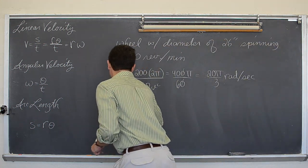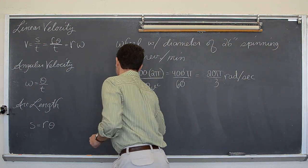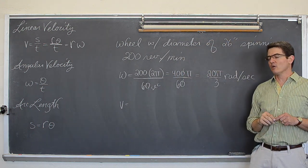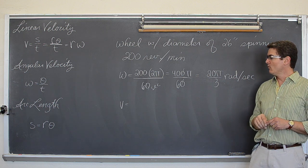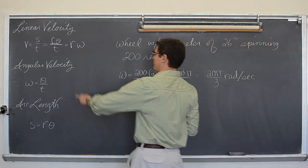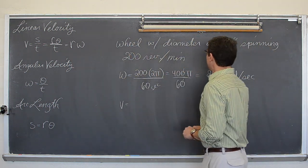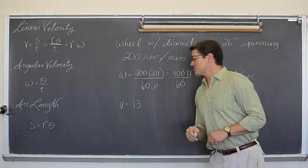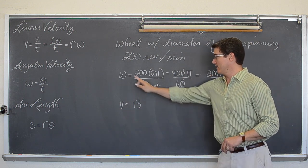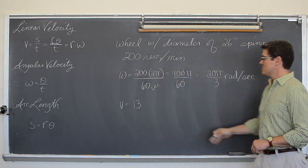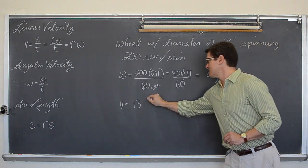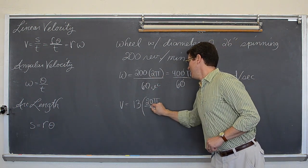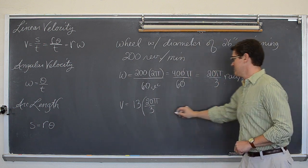Let's find out how far a tip of a spoke on that wheel is going to travel over that one second period. Well, linear velocity, if we already have angular velocity, is r, the radius. Well, if the diameter is 26, the radius is going to be 13, so we have r, ω. We already have ω worked out. So, it is the radius, half the diameter, times the angular velocity of 20π over 3 radians per second.